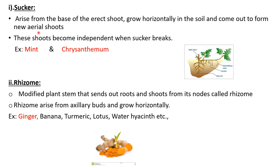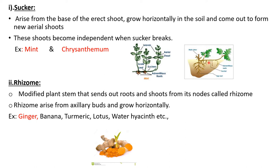What is a sucker? Suckers arise from the base of the erect shoot, grow horizontally in the soil, and come out to form new aerial shoots. These shoots become independent when the sucker breaks. The best examples are mint and chrysanthemum. This long portion in both diagrams is called sucker, which grows inside the soil and at a certain point comes out and forms shoots, with adventitious roots formed along it.